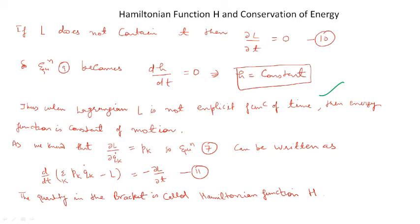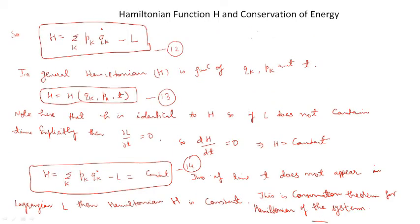From the generalized momenta, we also know that ∂L/∂Qk-dot = Pk. So if we substitute this into equation 7, it can be written as: d/dT [Σk Pk·Qk-dot − L] = −∂L/∂T. The quantity in the bracket is called the Hamiltonian function, represented by capital H. It is different from small h — small h was the energy function, but capital H is the Hamiltonian function. So, capital H = Σk Pk·Qk-dot − L — equation 12.